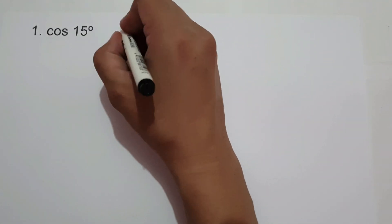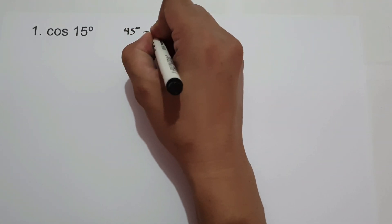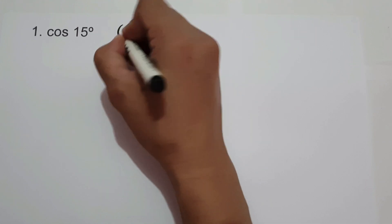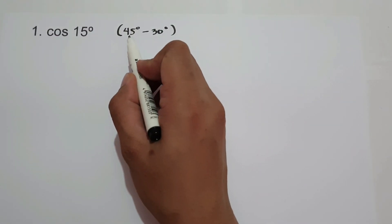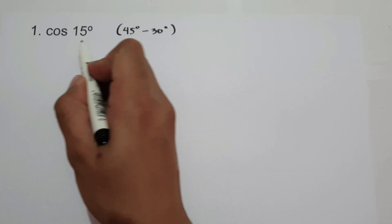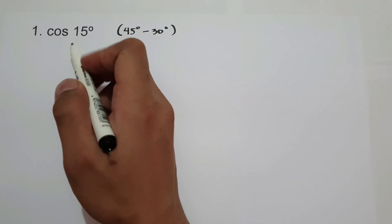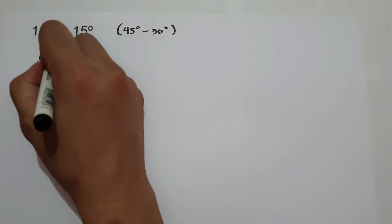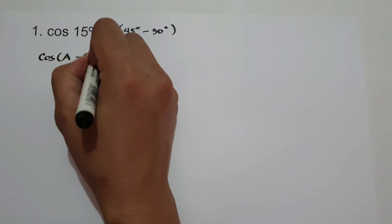On the first example, we have cosine 15 degrees. How can we use the sum and difference formula to evaluate cosine 15 degrees? First, we need to find two angles that can be added or subtracted to get 15. That is 45 degrees and 30 degrees. If we subtract 45 degrees and 30 degrees, we get cosine 15 degrees. Therefore, we are going to use the formula cosine(A-B).